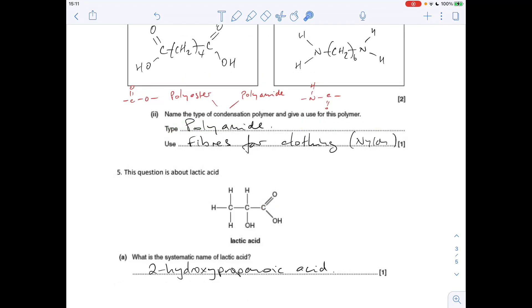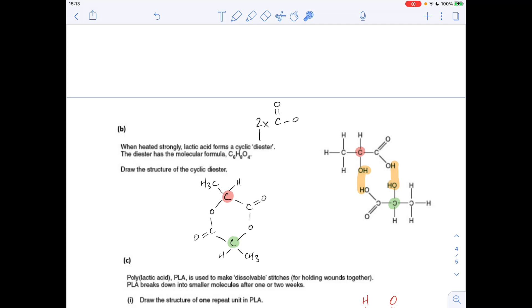Question five is about lactic acid. So we've got to use the IUPAC rules to come up with a systematic name for lactic acid. Longest continuous chain is three, so it's propanoic acid. And we've got this OH group on carbon 2, so it's 2-hydroxypropanoic acid.